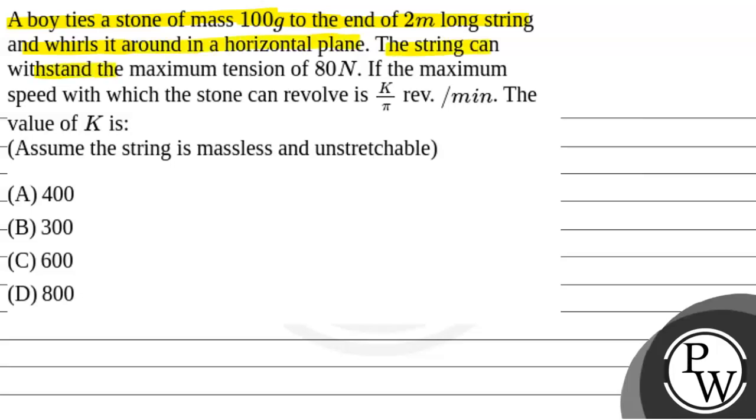The string can withstand the maximum tension of 80 Newton. If the maximum speed with which the stone can revolve is k by pi revolution per minute, the value of k is, assuming the string is massless and unstretchable.